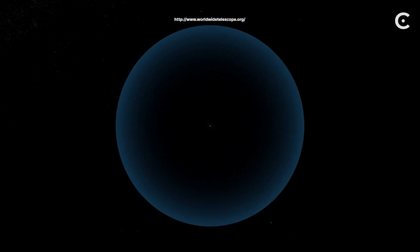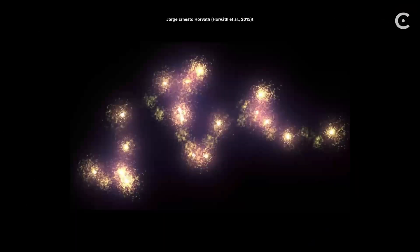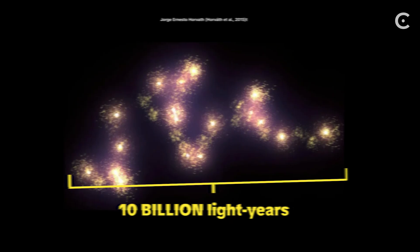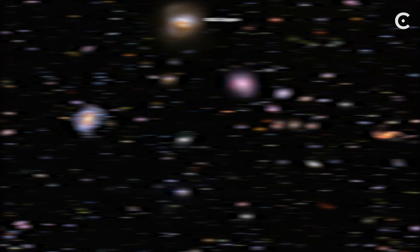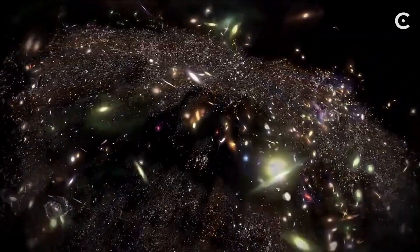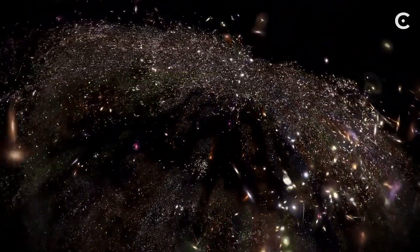What if I told you there's a structure in space so massive, light itself takes 10 billion years just to cross it? That's not a galaxy. That's not even a million galaxies. So what is it? And why do some scientists think it shouldn't even exist?